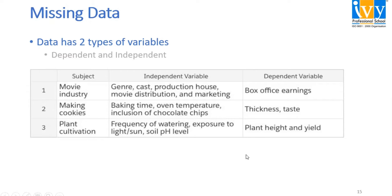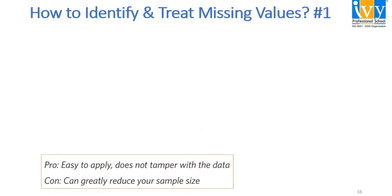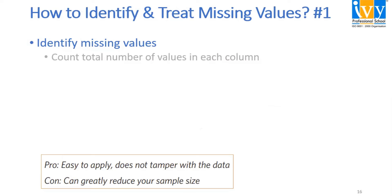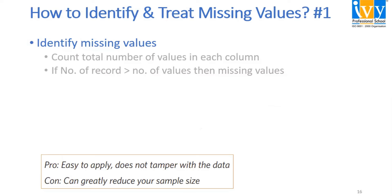So let's have a look at some data and see what we can do with missing data. It may be missing in either or both types of variables. To identify missing values, count the total number of values in each column — if the number of records is greater than the number of values, then those are the missing values.